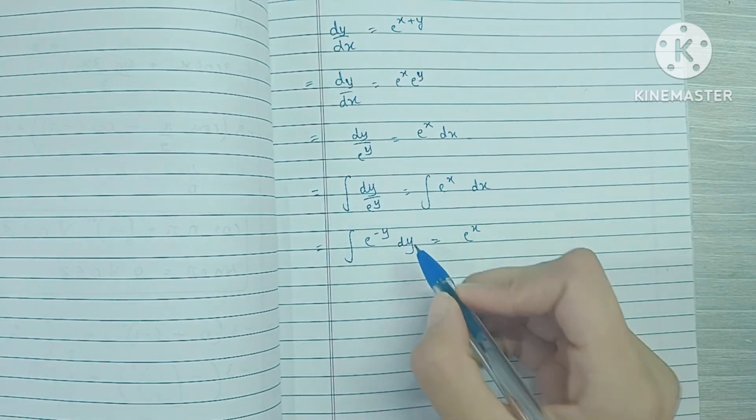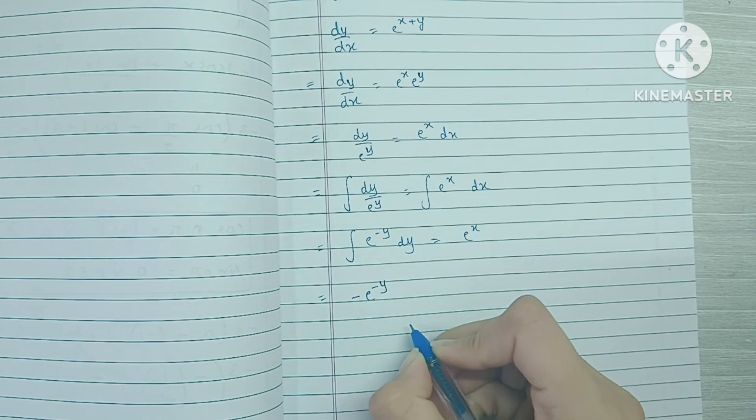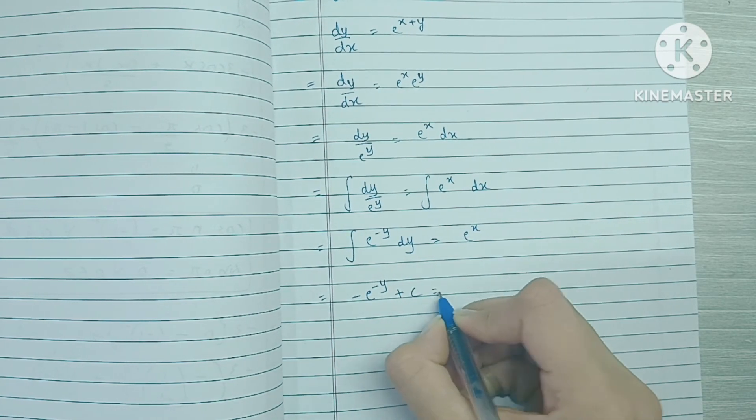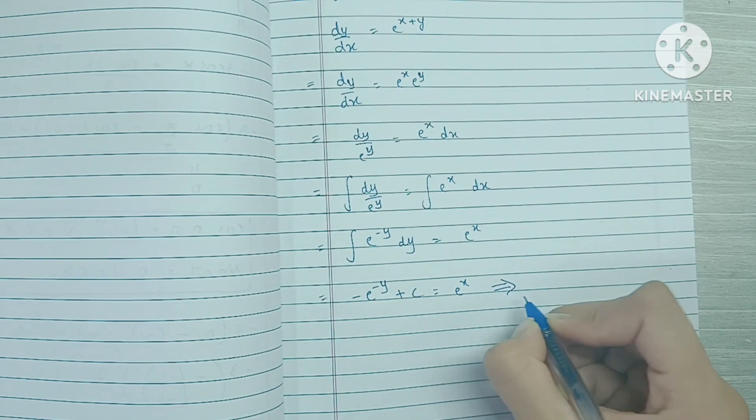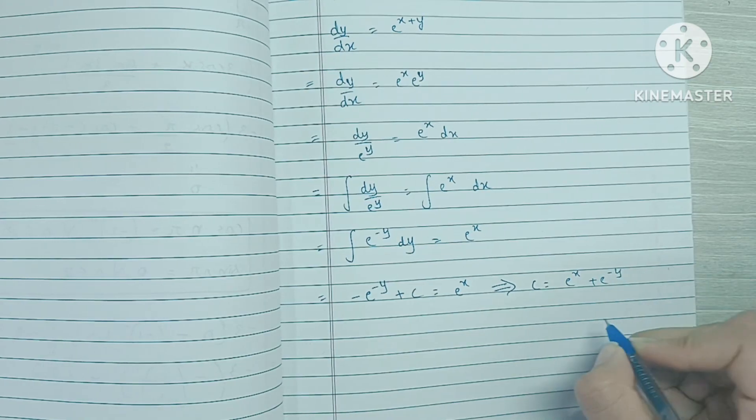So over here the integration of e raised to minus y would be minus e raised to minus y. Add a constant. And this becomes c is equal to e raised to x plus e raised to minus y.